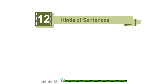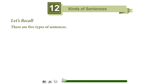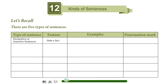Chapter 12: Kinds of Sentences. Let's recall there are five types of sentences. Types of sentence, features, examples, and punctuation marks. Declarative or assertive sentences state a fact. Example: The sun does not rise much above the horizon near the poles. Punctuation: full stop.